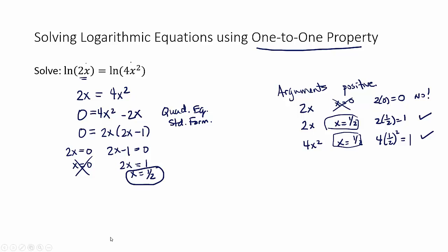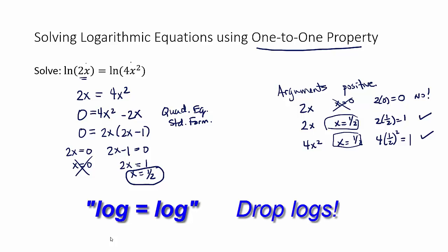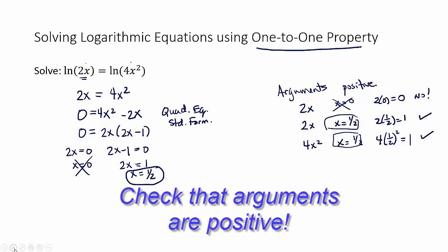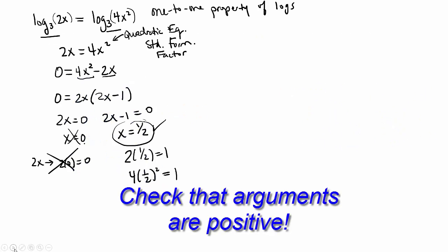All right, so the two takeaways that I want you to take from this problem are number one, when you see a log equal to a log, you can drop the logs. So those are the easiest kind of logarithmic equations. And number two, whatever is left behind, whatever equation is left, you have to use whatever technique is required. It could be a linear equation, it could be a quadratic equation, it could be a radical equation. Whatever technique is required from that point is what you have to switch gears and do. And always, of course, check your answers.